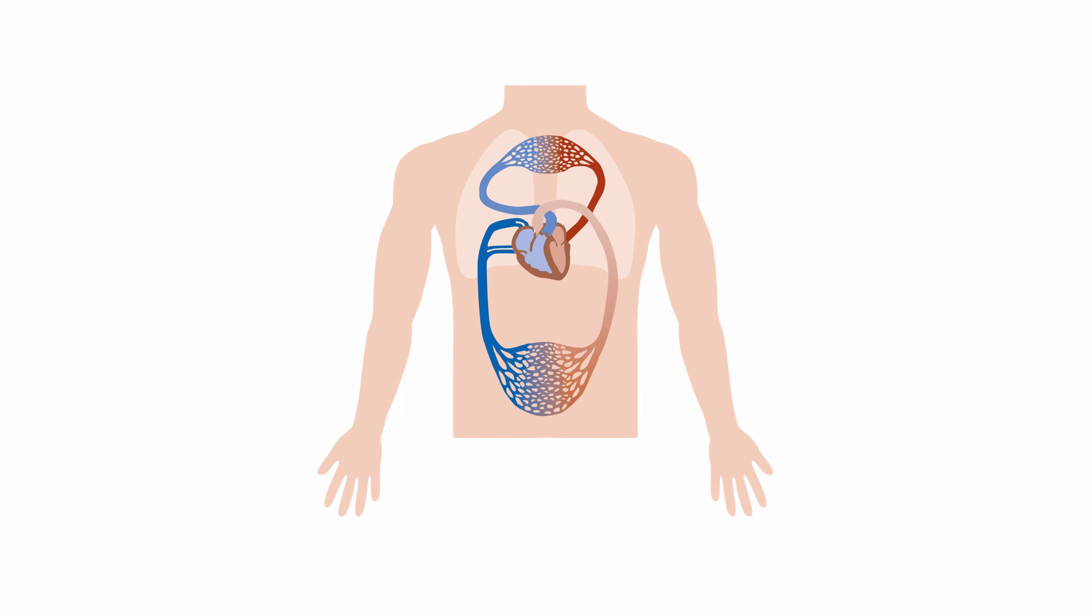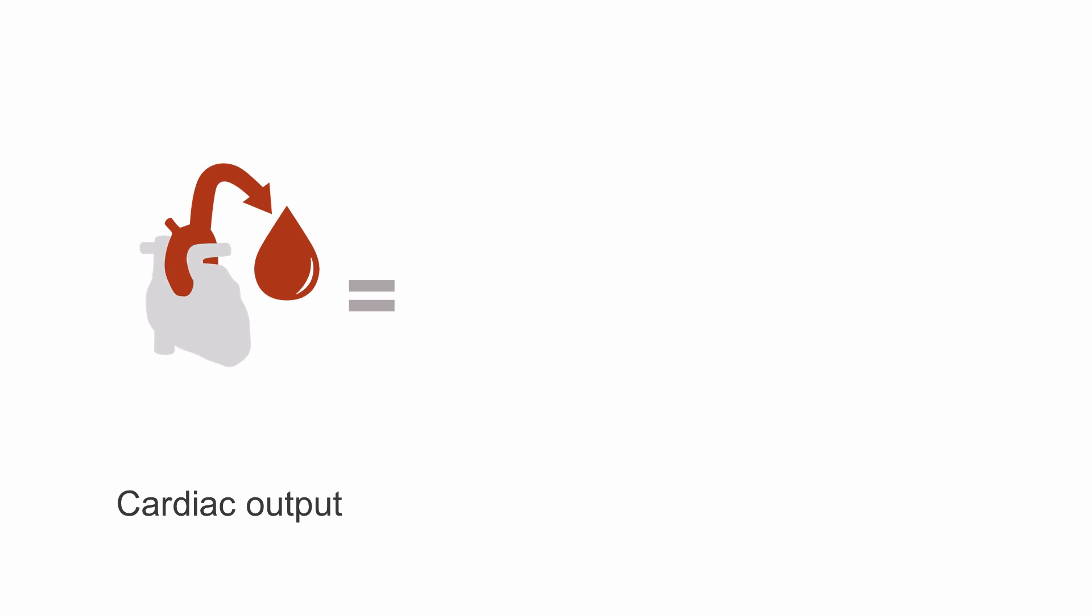Cardiogenic shock is inadequate perfusion originating from failure of the heart to pump blood effectively. The cardiac output produced by the heart is equal to the stroke volume times the heart rate.